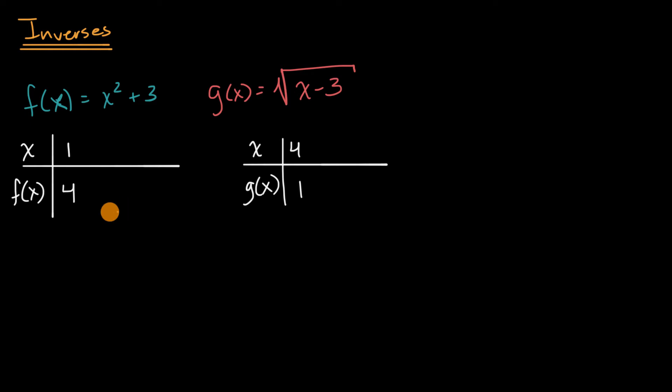So that's looking pretty good. Let's try one more value here. Let's try two. Two squared plus three is seven. Now let's try out seven here. Seven minus three is four. The principal root of that is two. So, so far it is looking pretty good.